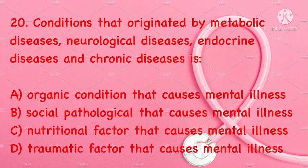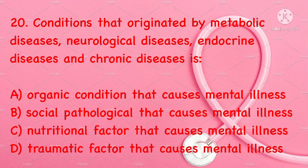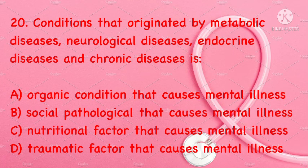Conditions that originate from metabolic diseases, neurological diseases, endocrine diseases and chronic diseases is: organic condition that causes mental illness, social pathological factor, nutritional factor, or traumatic factor that causes mental illness. Correct answer is A: organic condition that causes mental illness.